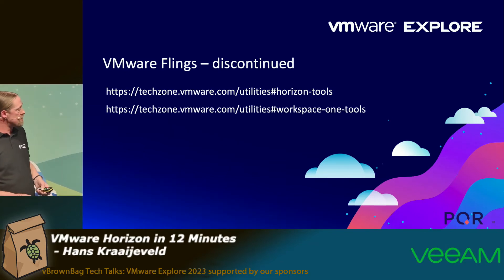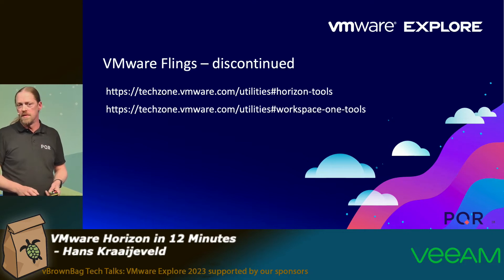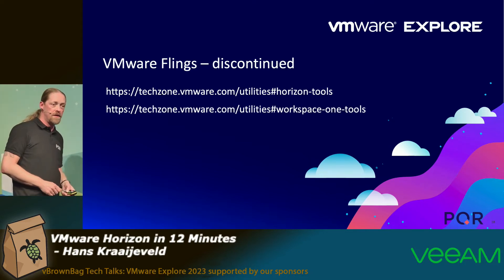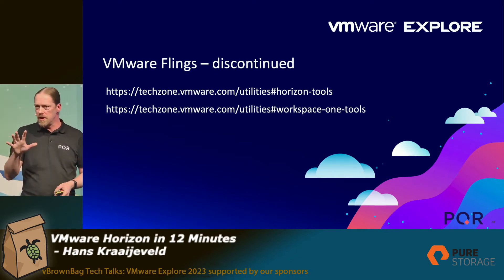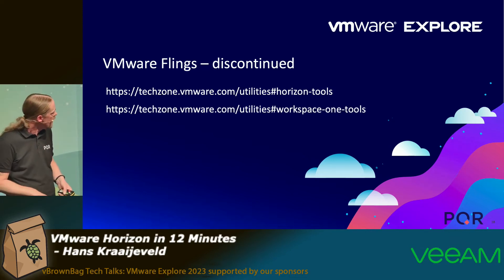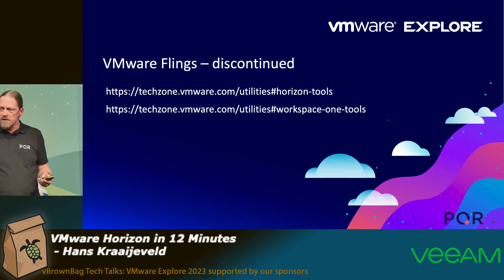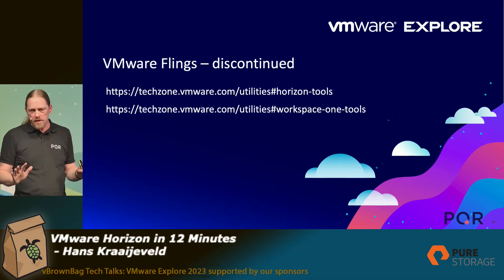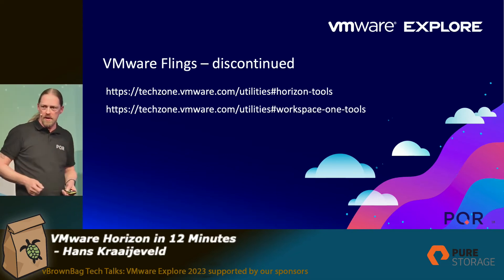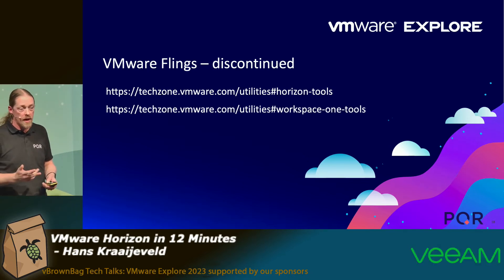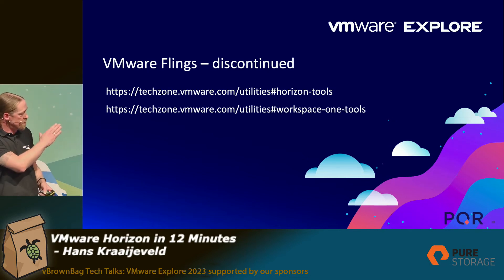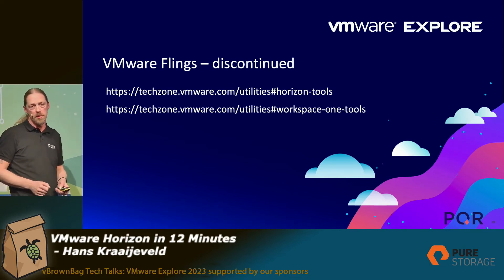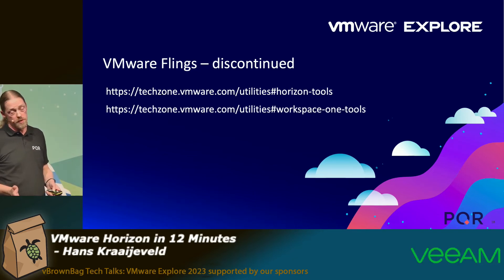One other thing I want to mention: who of you here knows that the VMware Flings site was discontinued? The Flings site is now offline — it redirects to a GitHub page. VMware Flings was a site on which a lot of VMware people made all kinds of handy tools available, not productized, but just without support, that you could download and use in your environment. They had tools for Horizon, for Workspace ONE, for migration, and a lot of other VMware stuff as well. For the EUC tools, you can find them on TechZone now. There are very many handy tools in there that you might be able to use in your environment.